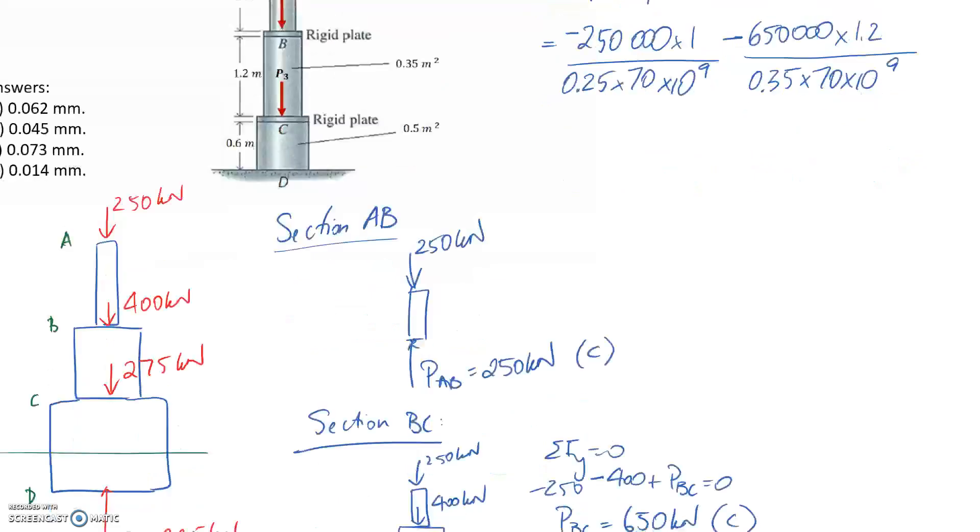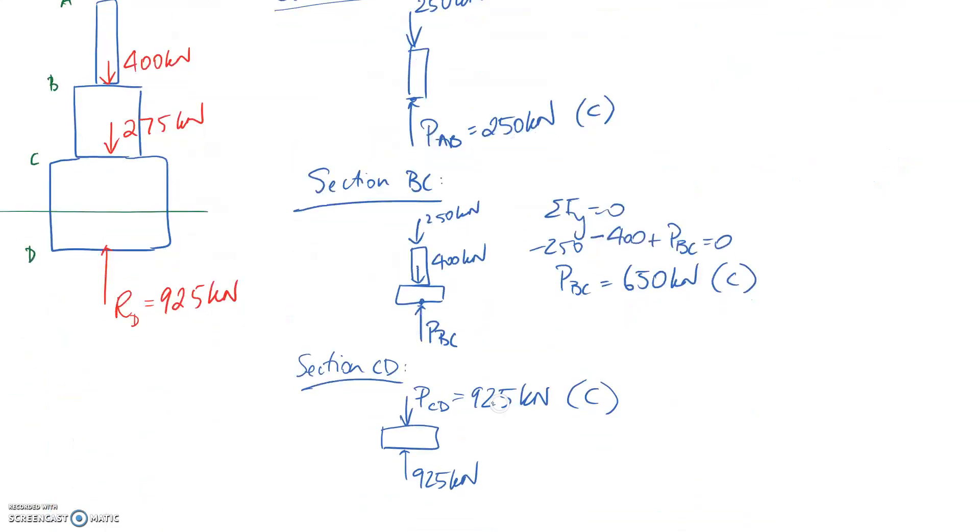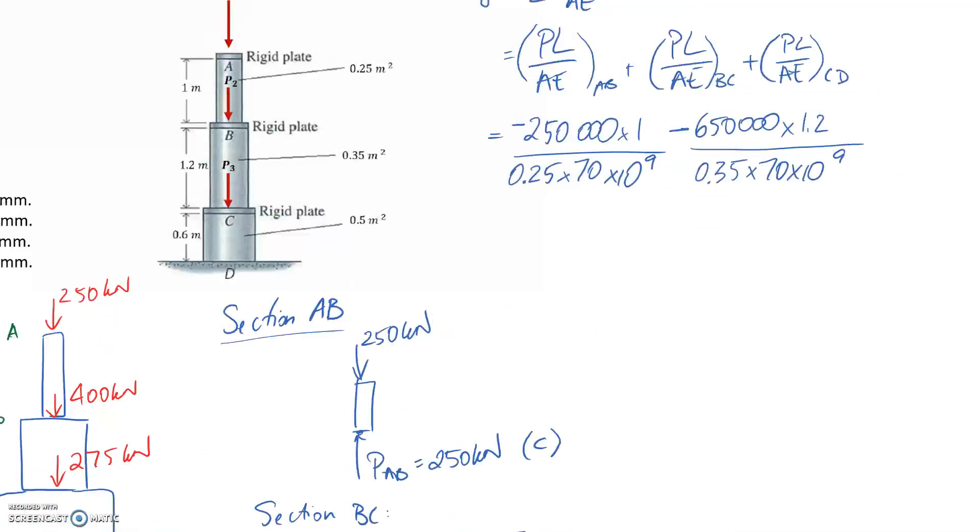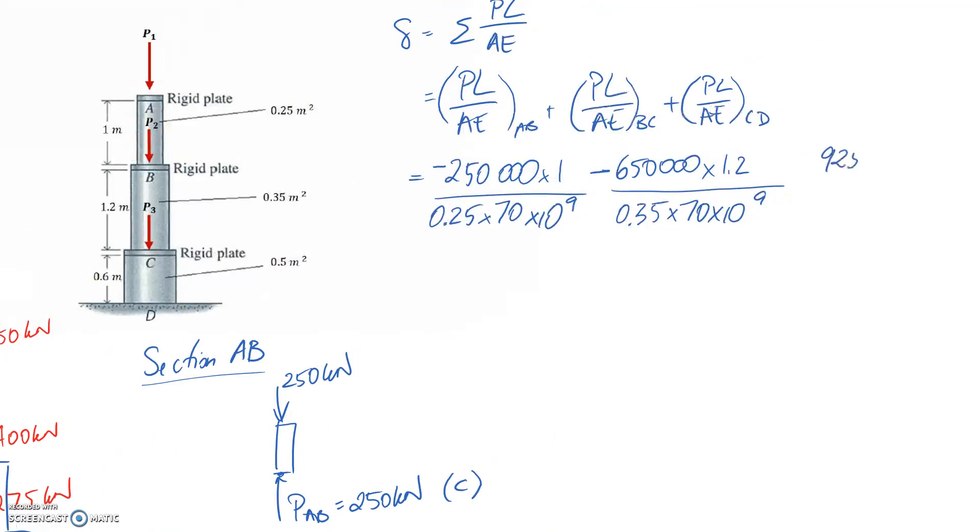Last one which is CD. The internal load we said was 925. We need to multiply it by the length which is 0.6. Next we need the area which is 0.5. Young's modulus is still the same. We also said this one was a compression section so it's going to be negative as well.